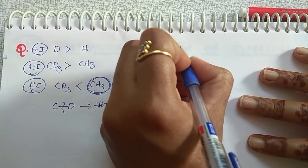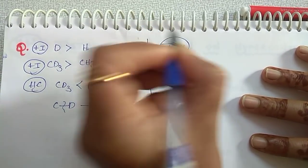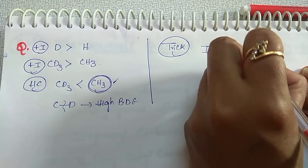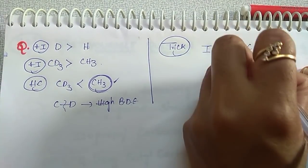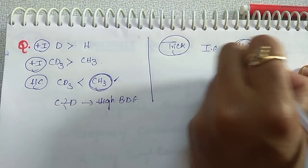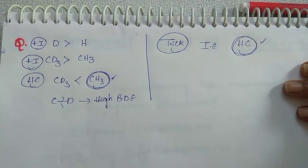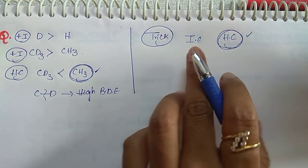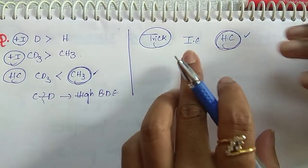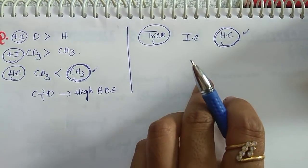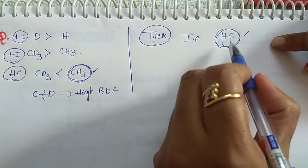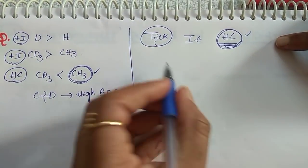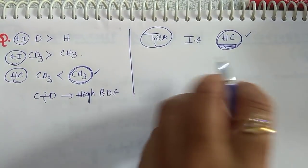One more trick while solving questions: whenever both inductive effect and hyperconjugation are possible, give priority to hyperconjugation. If only inductive effect is present, then consider inductive effect. If both are there, hyperconjugation dominates.